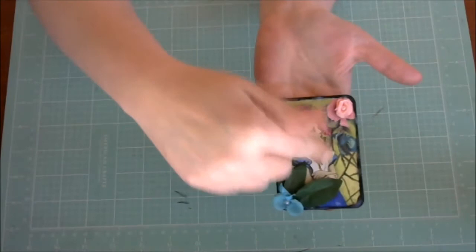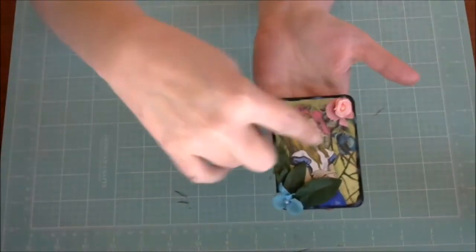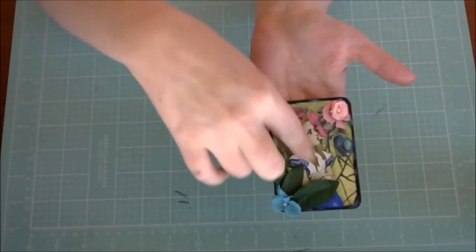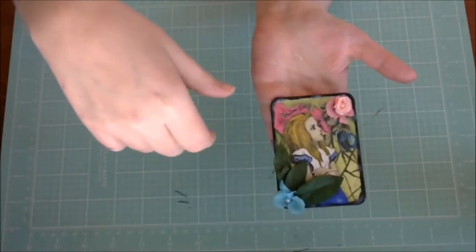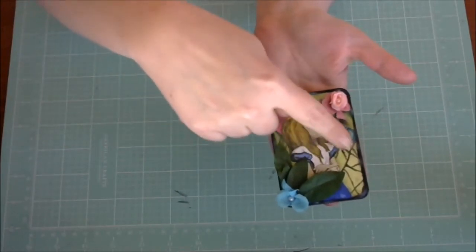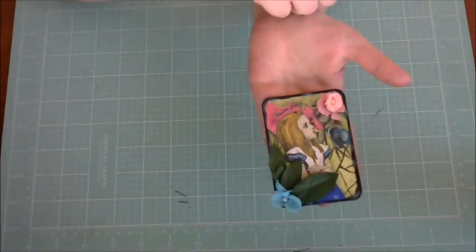I took an image that I had gotten from Michelle Holland here on YouTube. It's an Alice in Wonderland picture, and it was just a perfect size for an ATC. So I went ahead and just colored it with my alcohol markers.